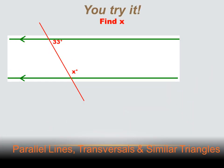Let's see what you learned. Given that the smaller angle is 33 degrees, how many degrees are in angle X? Hit your pause button, then hit your forward key to find the answer. They told us this angle was 33 degrees. We know there are 180 degrees along a straight line, so this angle is going to be 180 minus 33, which is 147 degrees. If we know this angle is 147 degrees, then we know angle X is also 147 degrees, because they're alternating interior angles. The answer is 147 degrees.